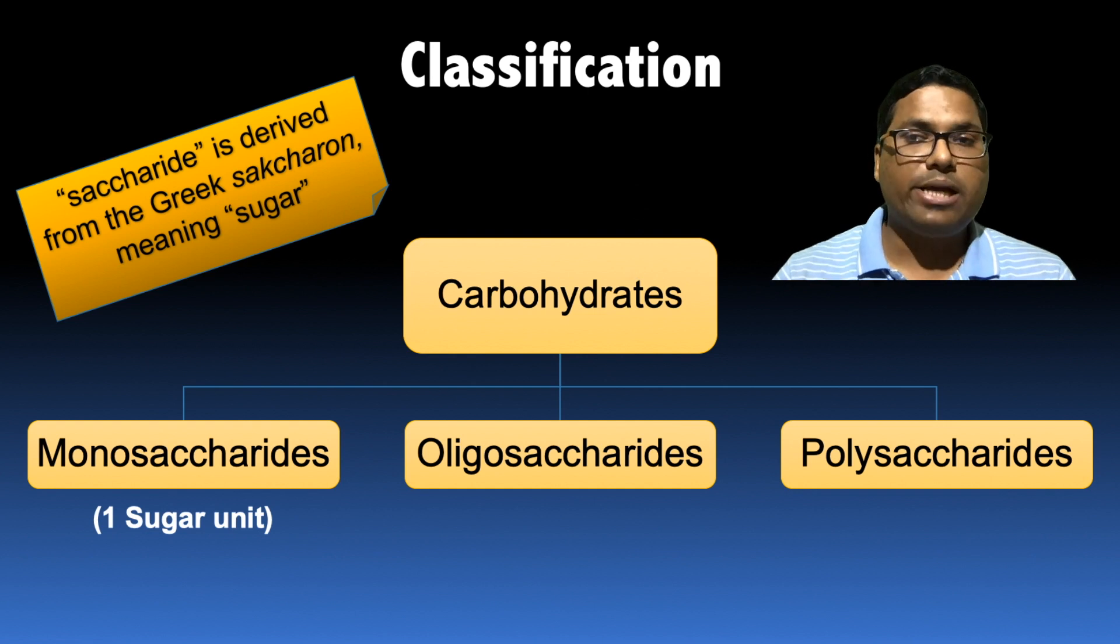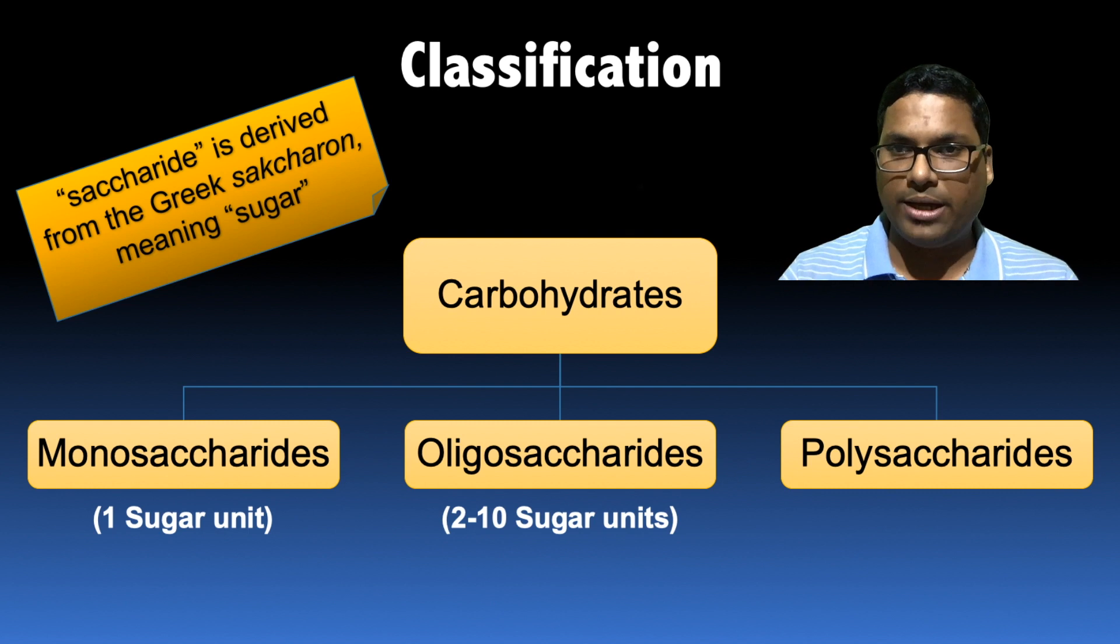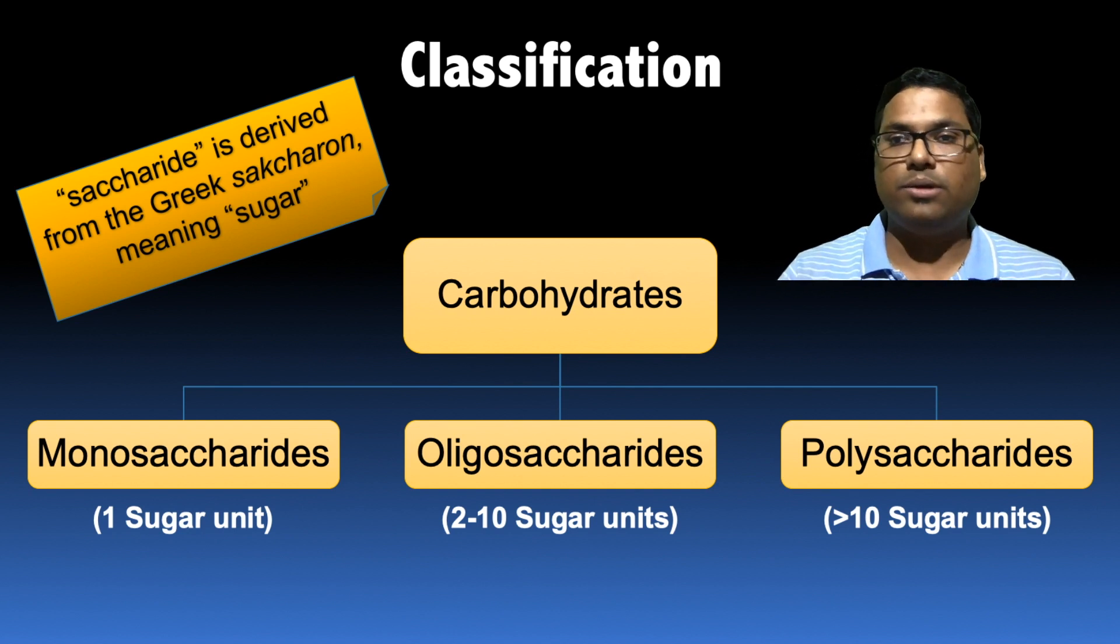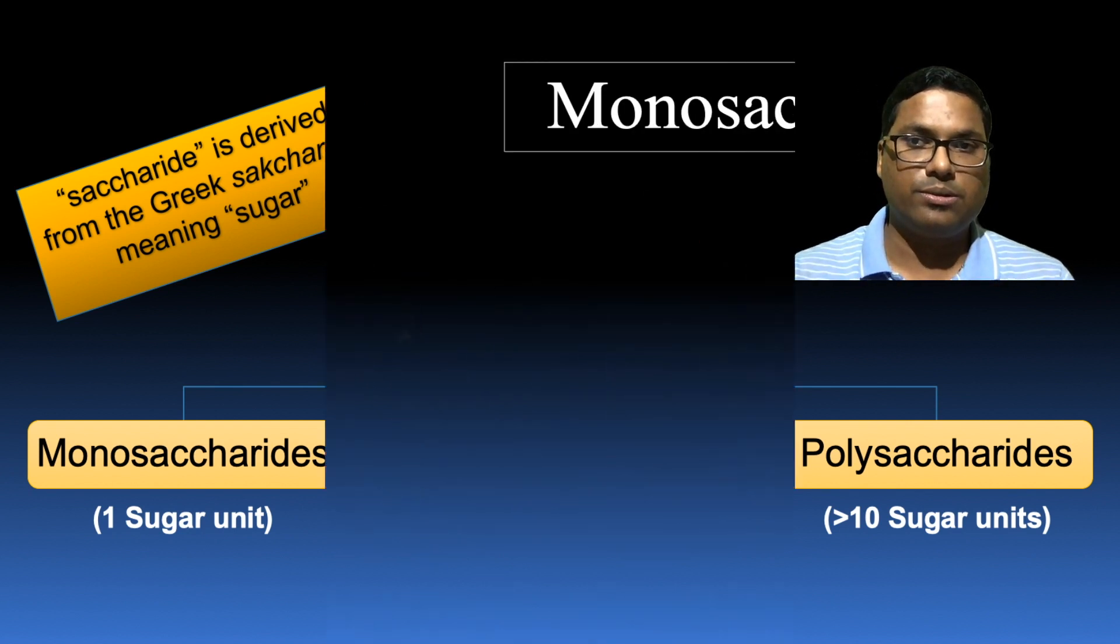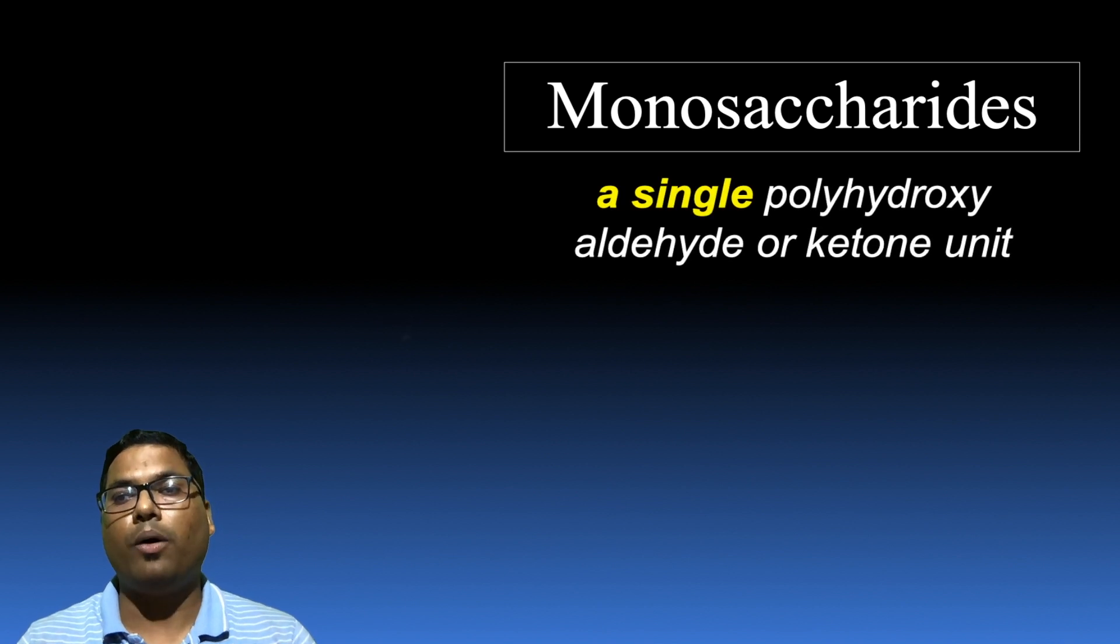Now monosaccharides are called in such a manner because they contain a single one sugar unit, while oligosaccharides are having two to ten sugar units, while in case of polysaccharides there are more than ten number of sugar units. So monosaccharides, they are single polyhydroxy aldehyde or ketone unit.